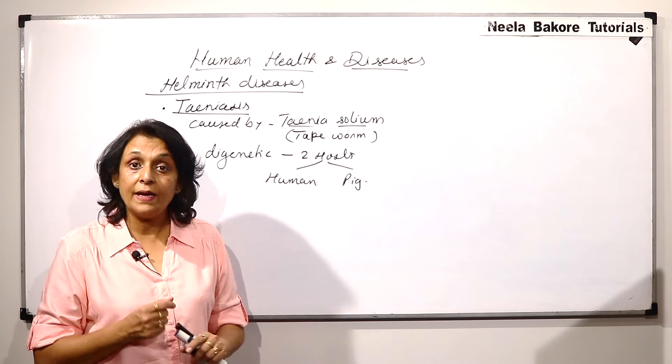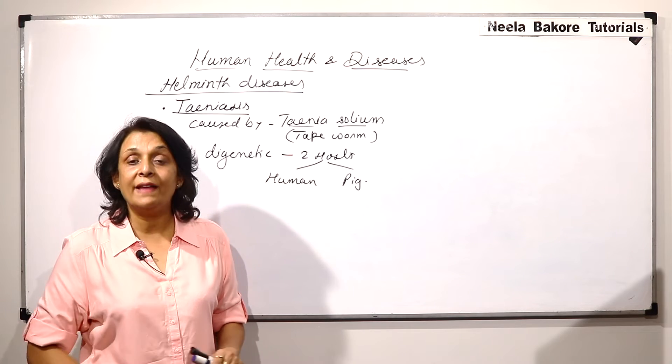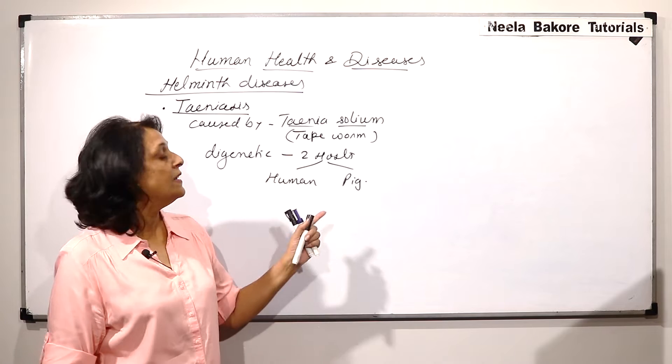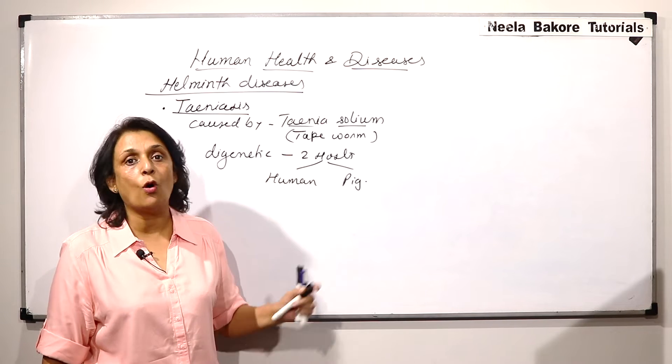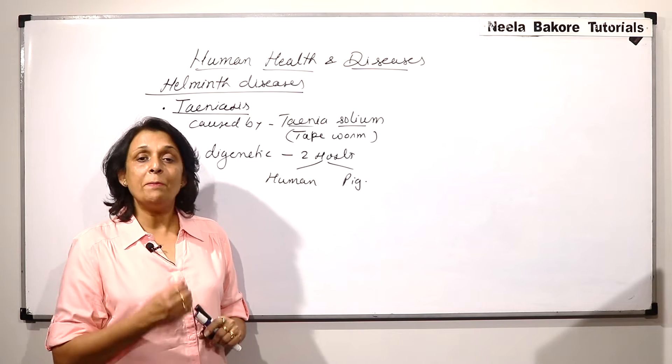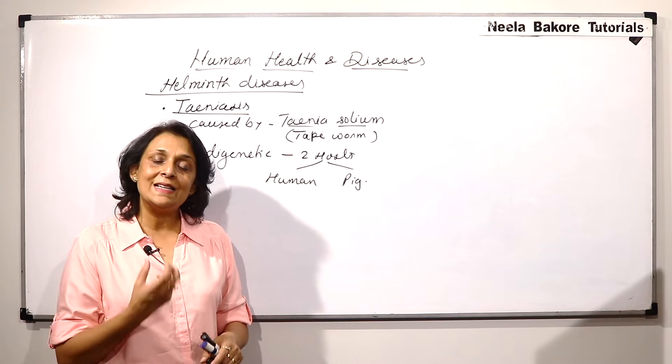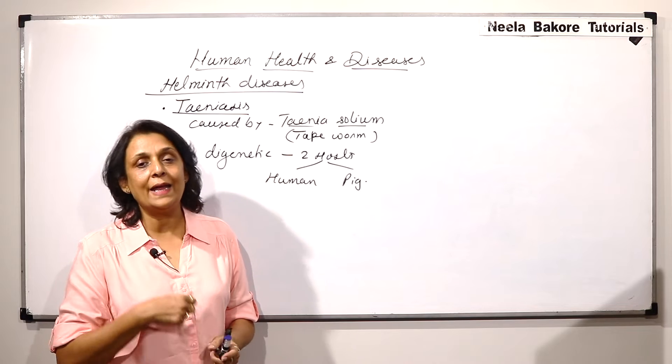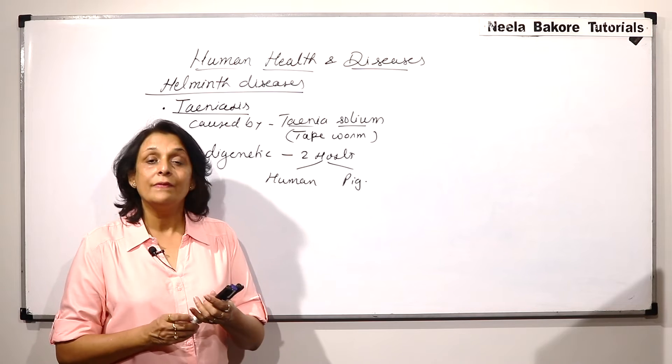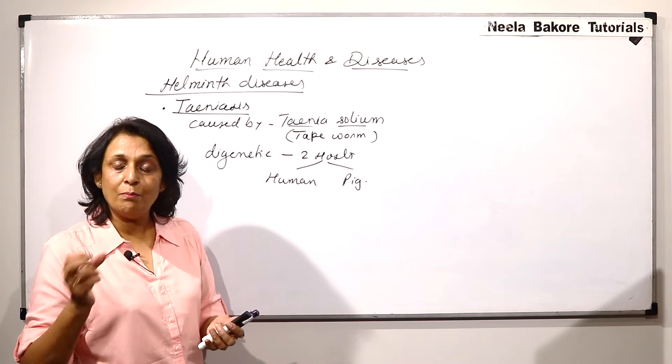And in pig, it is in the cyst form and that cyst remains in the pork. Pork is the meat of pig. So, people who eat improperly cooked pork, the cyst enters into our body and again it develops into the tapeworm or that complete helminth.